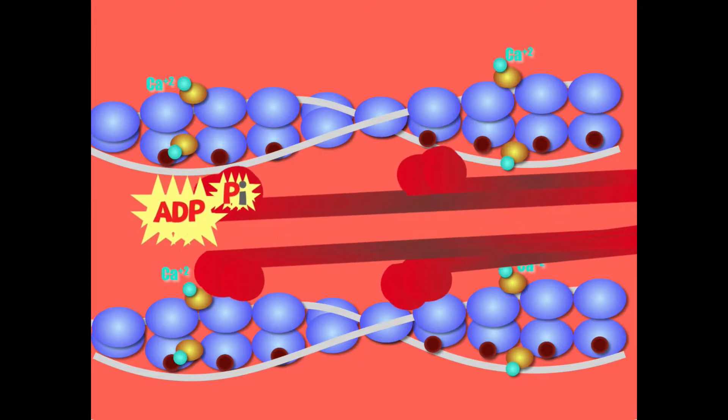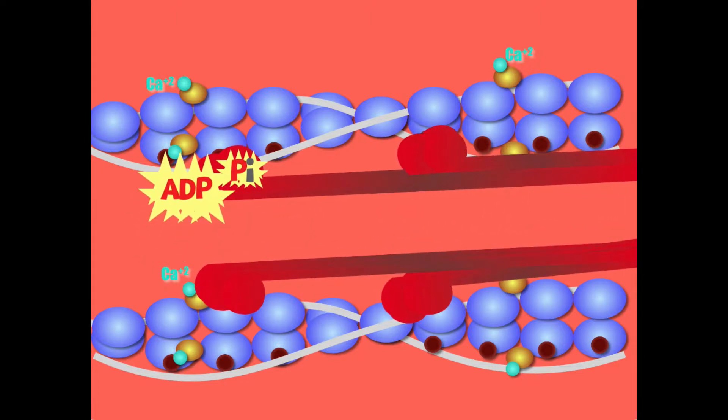The myosin head will bind to the active sites and this is called the cross bridge formation. Now you actually have the myosin and the actin combining together. There's a bridge between them, a connection.